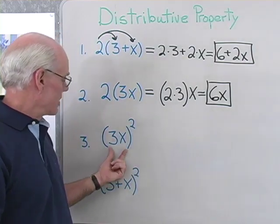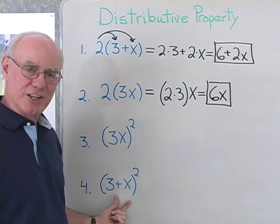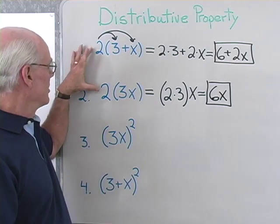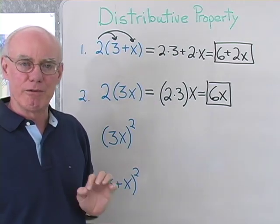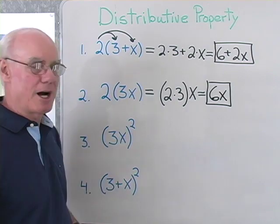How about an expression that looks like this: 3X to the second power. In this expression and this expression, the 2's right here are exponents, whereas in these two expressions the 2's are coefficients. This is multiplied by 2. This is raised to the second power.